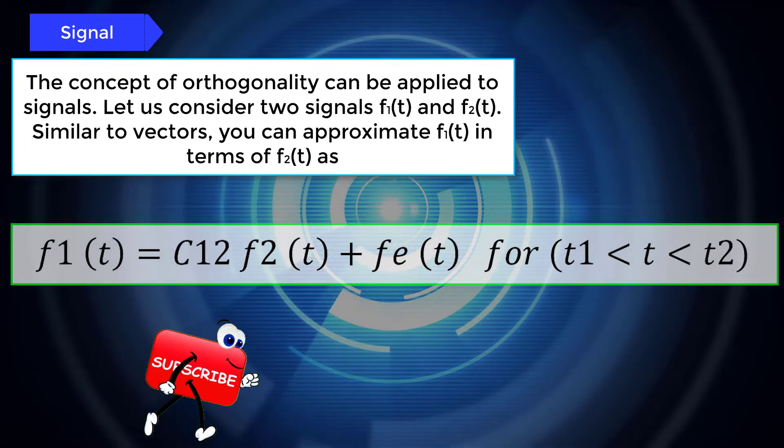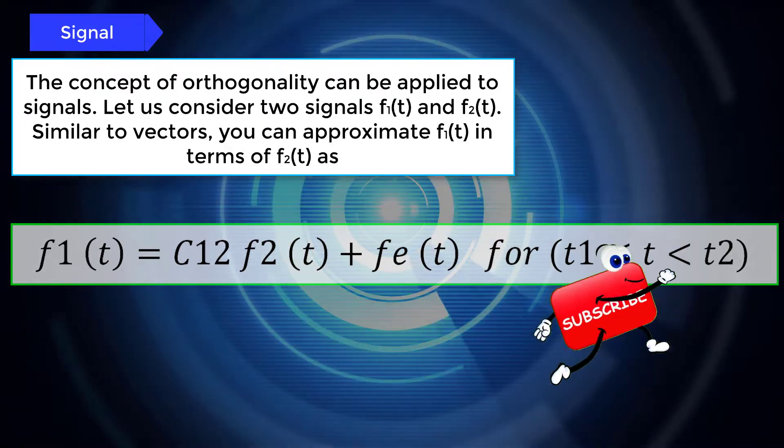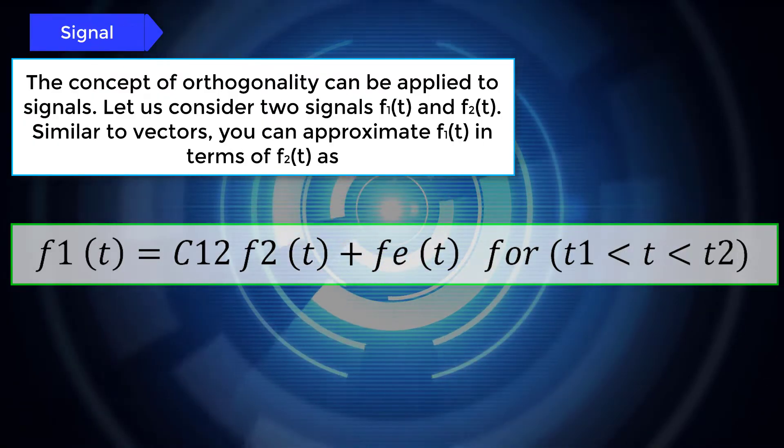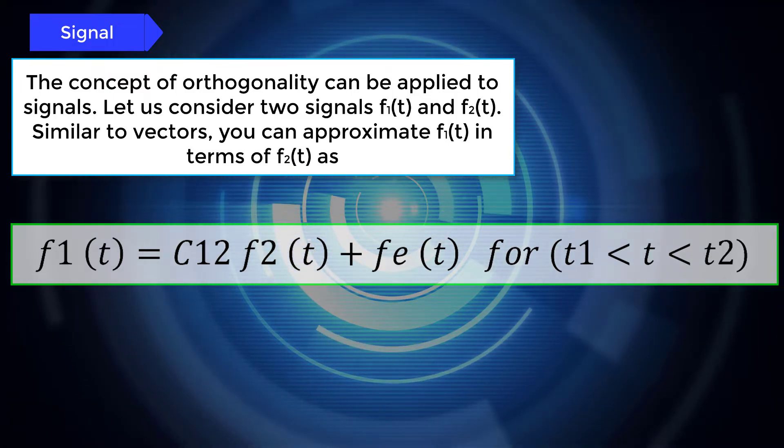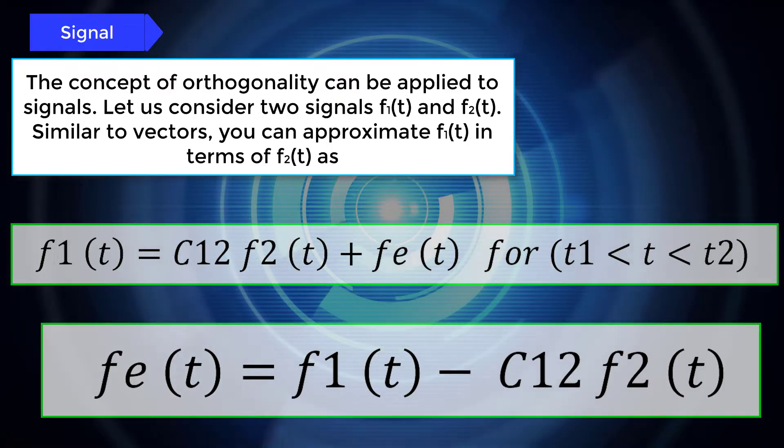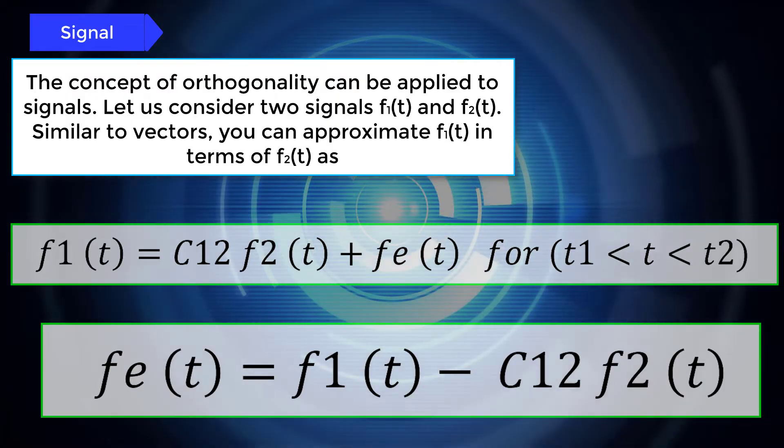f1(t) equals C12 into f2(t) plus fe(t) for t1 less than t less than t2. fe(t) equals f1(t) minus C12 into f2(t).